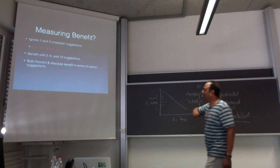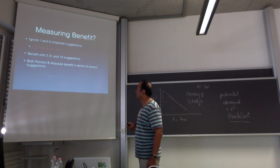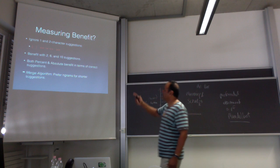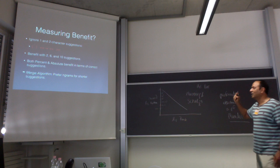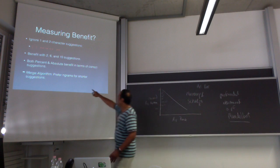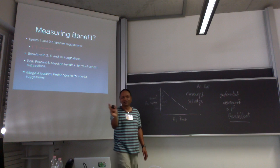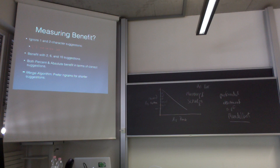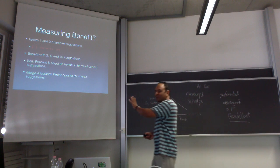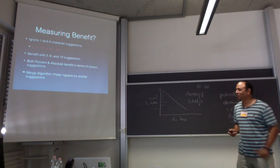We consider both percent and absolute benefit in terms of correct suggestions. We merge the suggestions from Eclipse with those from n-grams by a simple heuristic: when the n-grams suggest a shorter recommendation, prefer that, because programmers are likely to use shorter names more often. We have more frequent data for shorter suggestions, so the n-gram guesses are more likely to be correct for shorter tokens.